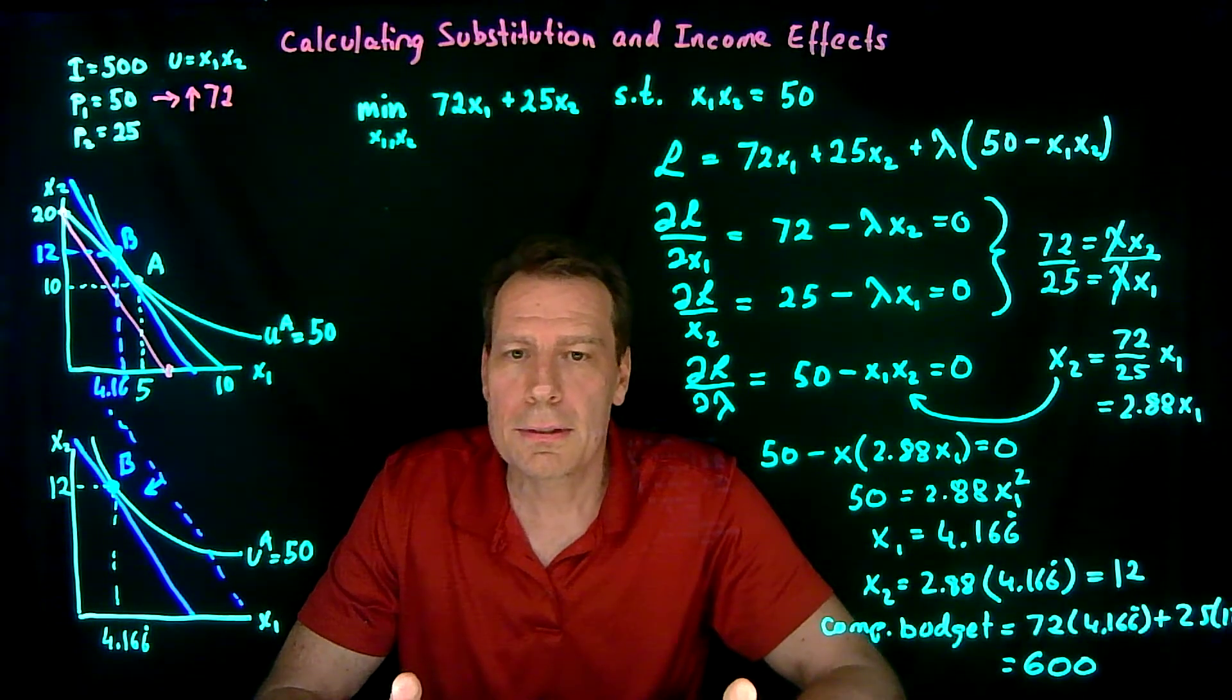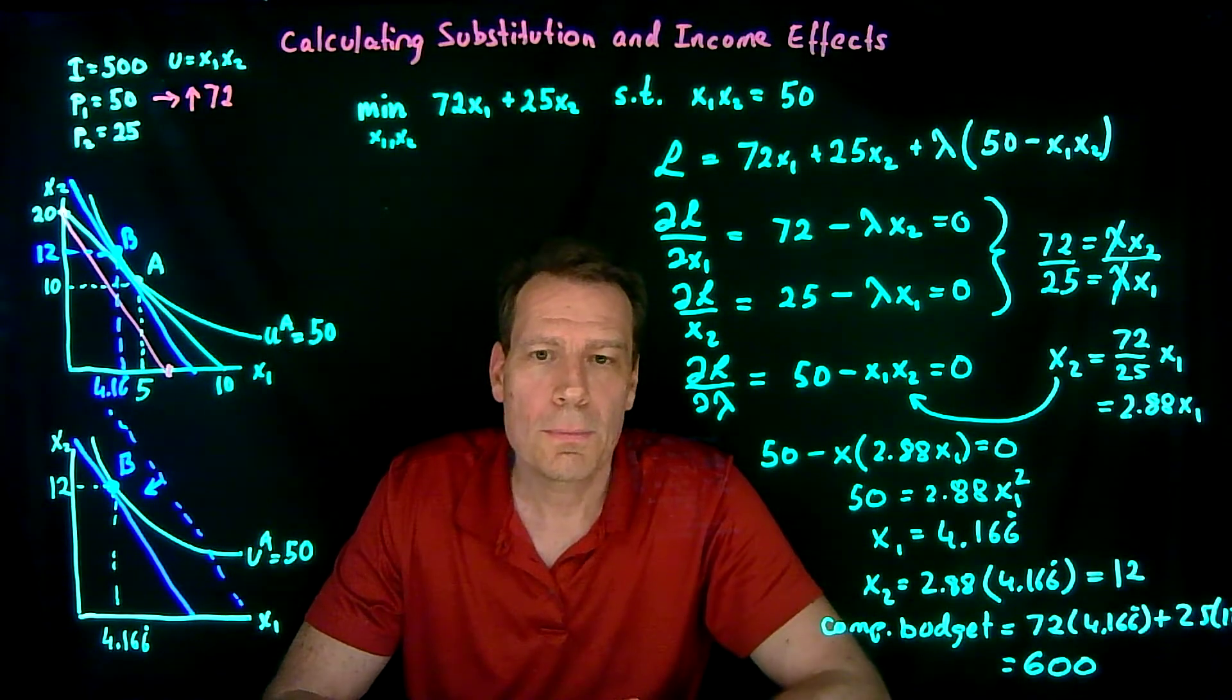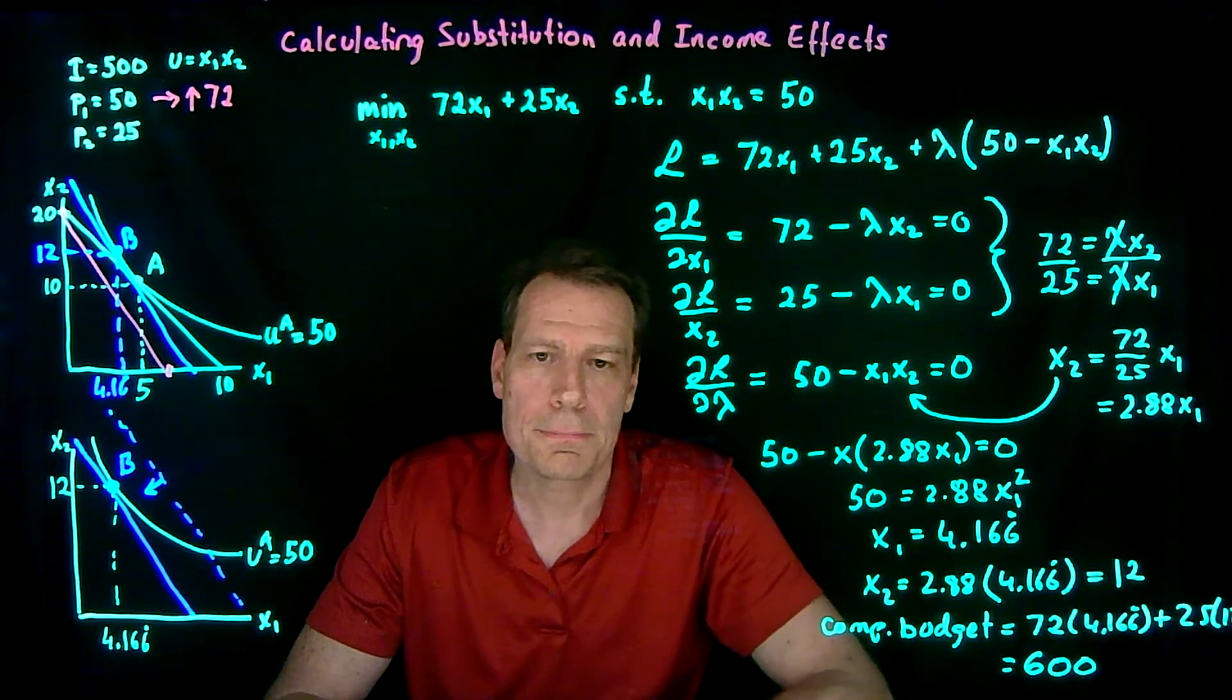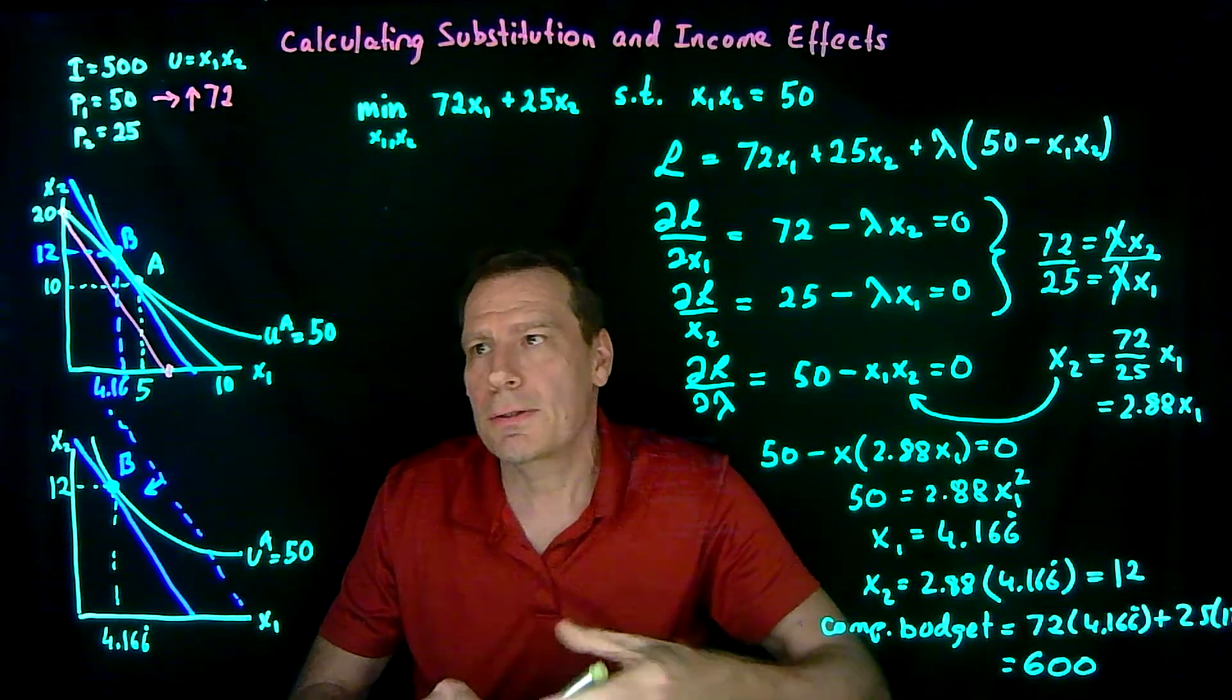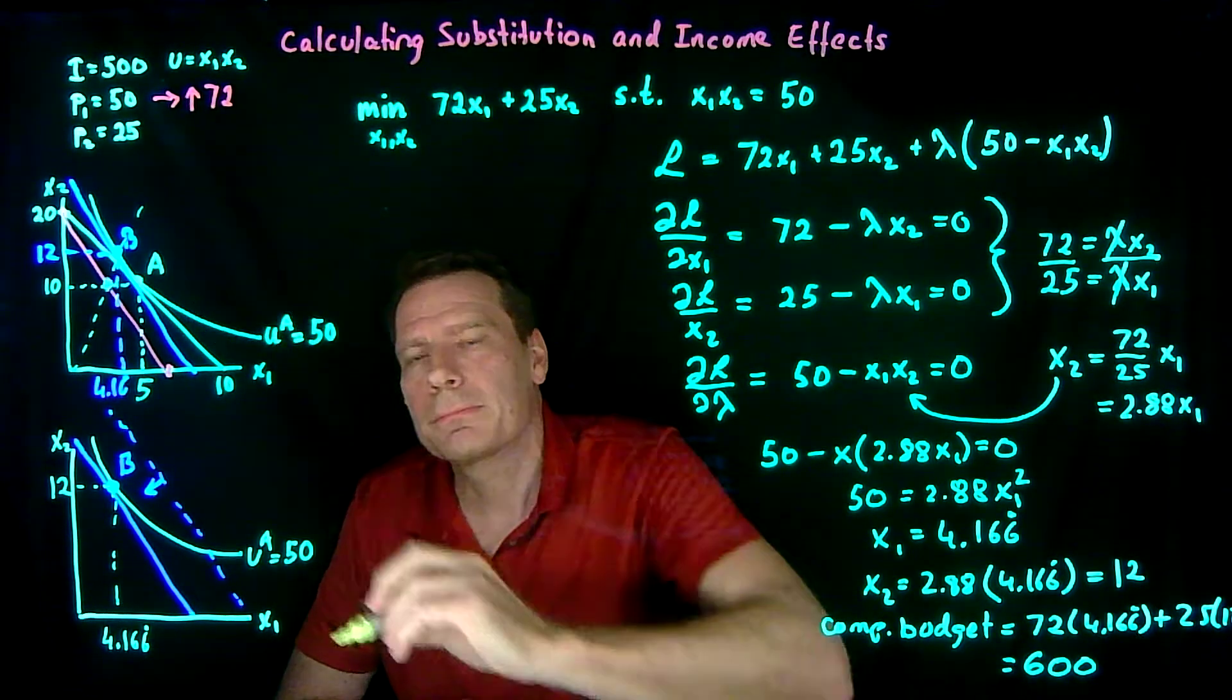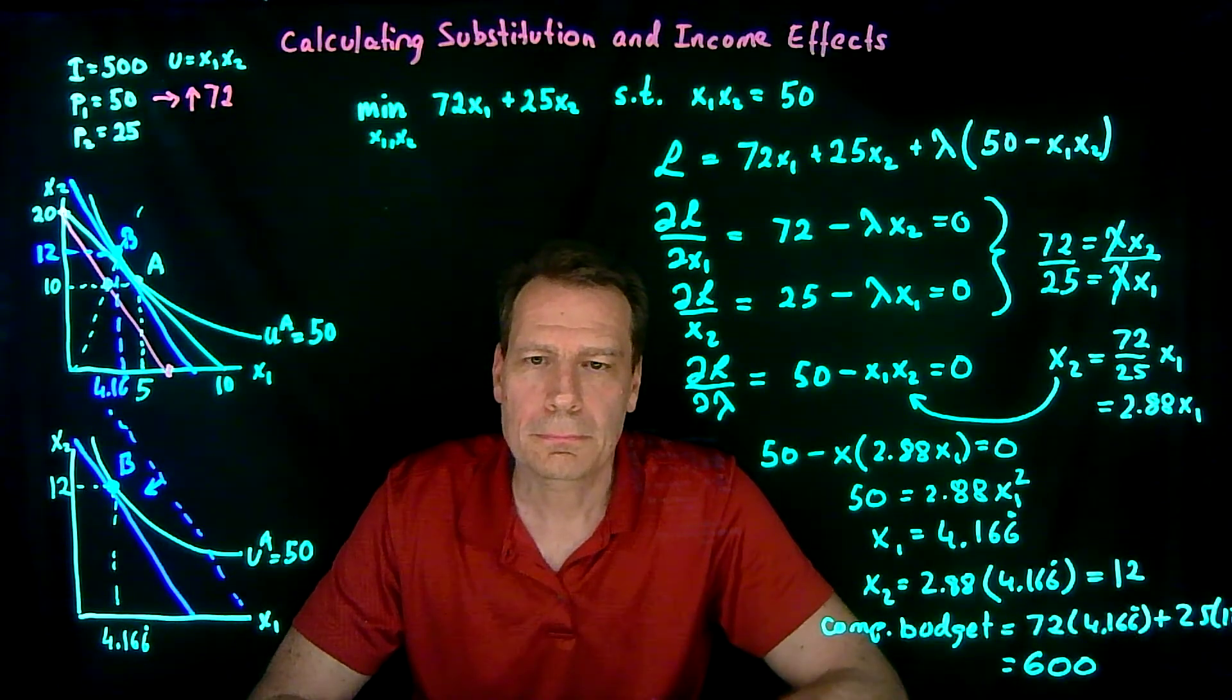So now we've calculated the substitution effect and of course we already know how to calculate where we're going to end up on the final magenta budget. We just do another optimization problem. We maximize the utility subject to the new constraint with the new price. That gives us the new tangency that we're going to end up at, this new tangency which in this case because this is a utility function that's homothetic would put us right here. It looks like it's 10 but it's not. It's not actually 10.